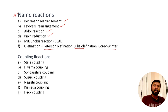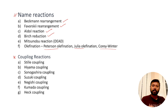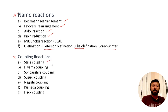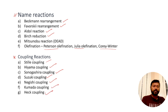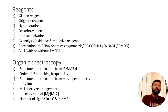Coupling reactions are also important — you may have studied these under organometallic compounds. You should know which catalyst is responsible for which coupling reaction and what the product will be. The major coupling reactions asked in your course are: Hiyama coupling, Sonogashira coupling, Suzuki coupling, Negishi coupling, Kumada coupling, and Heck coupling. These are the ones asked most frequently.